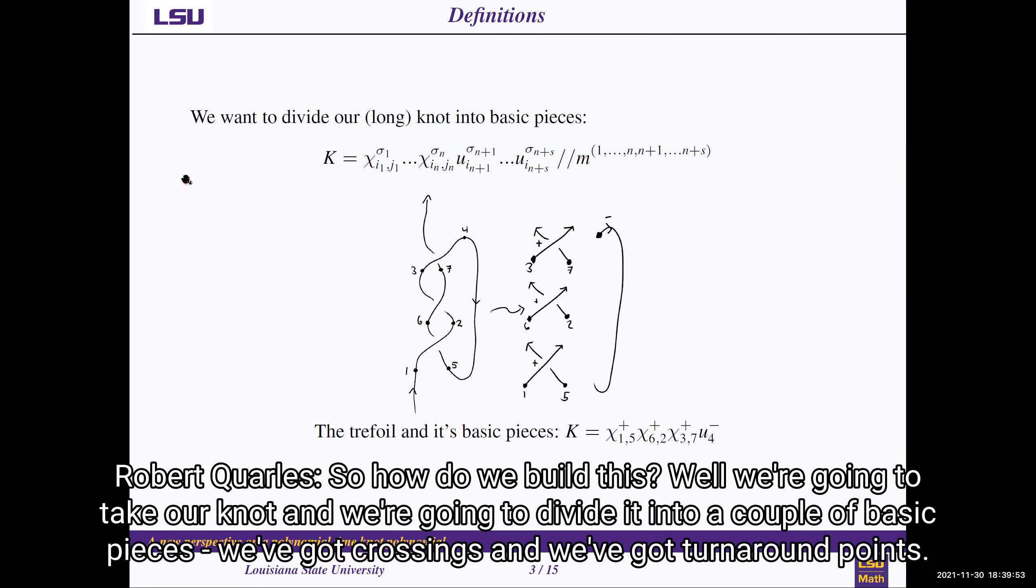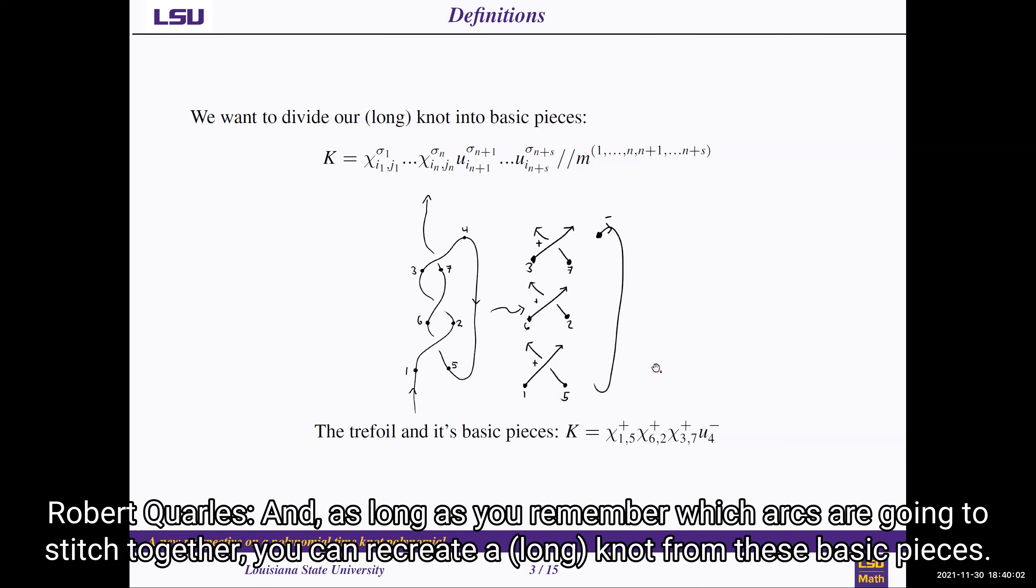So how do we build this? Well, we're going to take our knot and divide it into a couple of basic pieces. We've got crossings and we've got turnaround points. And as long as you remember which arcs you're going to stitch together, you can recreate a knot from these basic pieces.